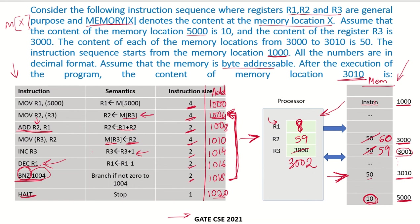Since R1 is not zero, we go back to address 1004 again. You can see this loop runs 10 times, updating memory locations 3000 through 3009. The values stored will be 60, 59, 58, 57, and so on. At the 10th instance R1 becomes 0, the branch is not taken, and execution falls through to the STOP instruction.